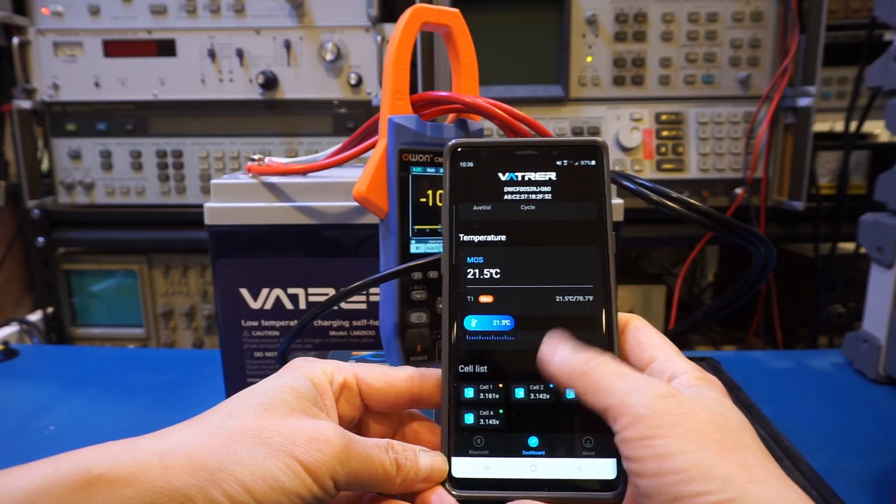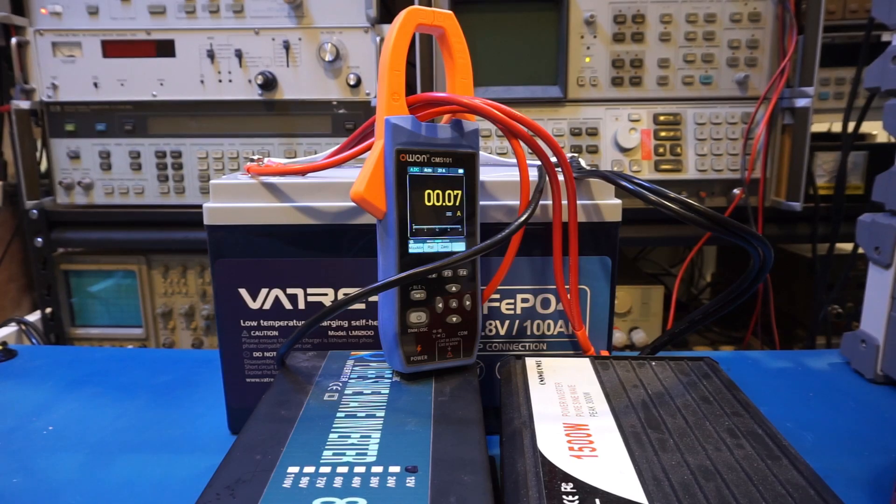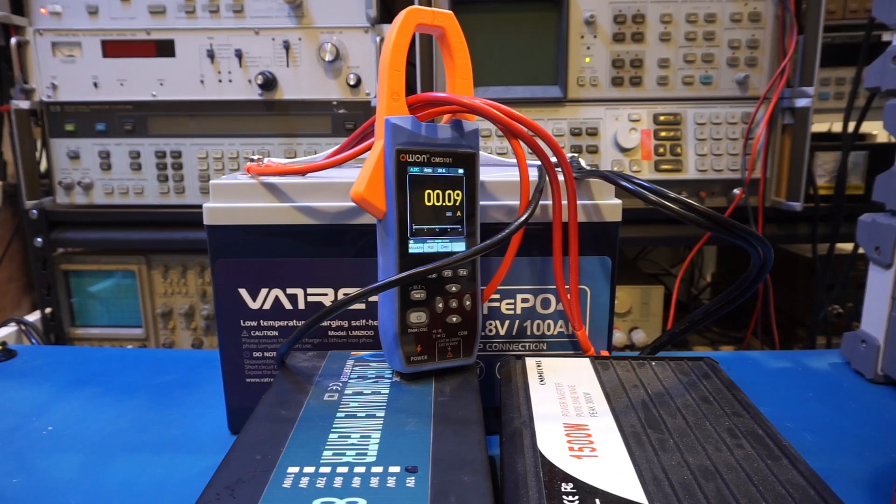From today's testing, the VATRER LM12100 100 amp hour LFP battery performed quite well. In our capacity testing we managed to get more than 104 amp hours from the battery, suggesting that VATRER is likely using quality prismatic cells inside. The manual mentioned the cells used are of EV grade. The battery was able to handle the maximum rated current with no issue, and the built-in protection is quite good. The bluetooth connectivity along with the phone app makes monitoring much easier. I hope you found this video useful. If you liked it, please give it a big thumbs up and don't forget to subscribe to the channel for more videos like this in the future. Thanks for watching, and I will see you next time.